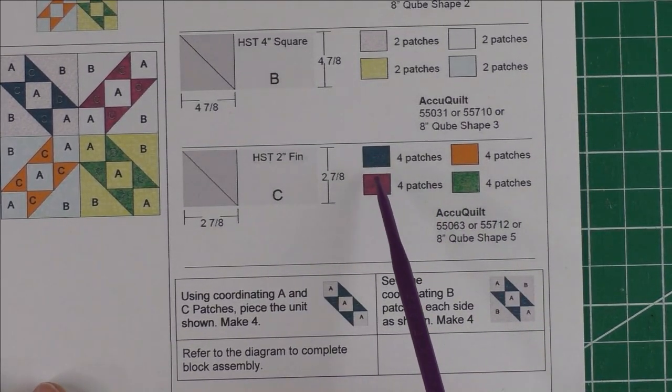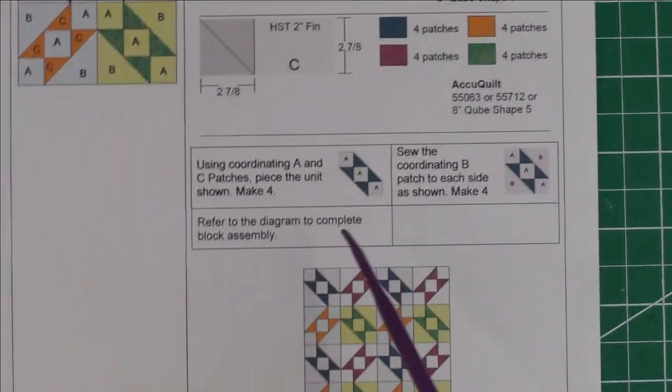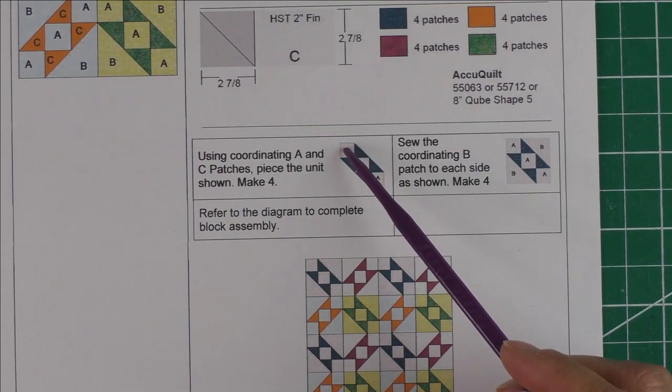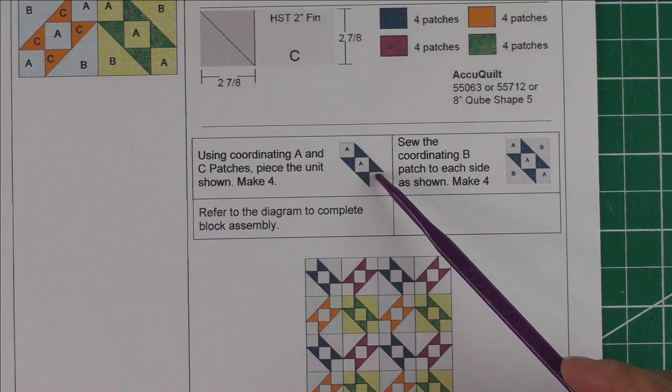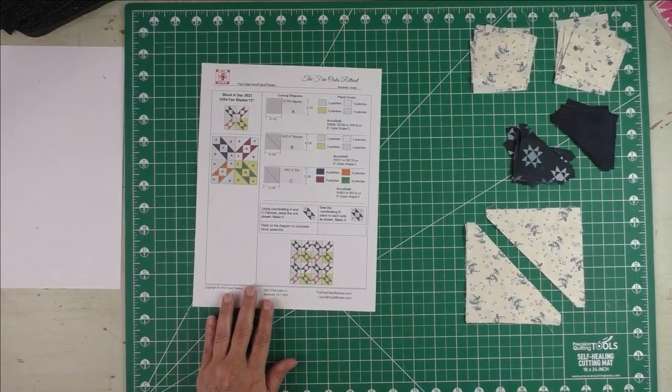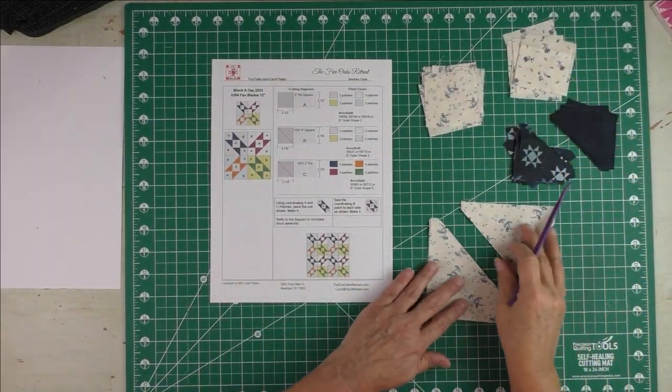The first thing we're going to do is piece this AC unit, which is the diagonal that goes across, and then we'll simply add the triangles to the side. Now let's look at the fabrics I have chosen. I had these blues that came in a fat quarter pack, and the blues were so close together that I can separate them out and do lots of different things.